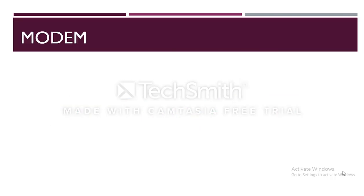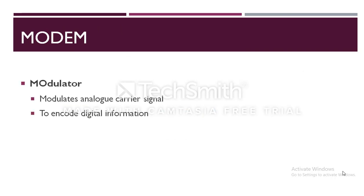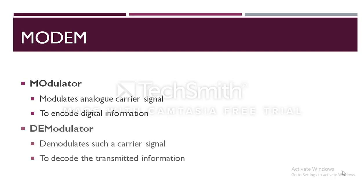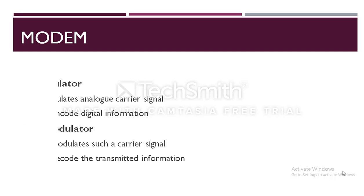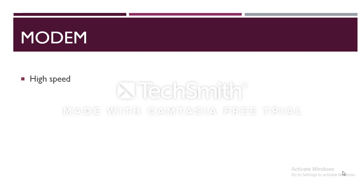It modulates an analog carrier signal to encode digital information. It also demodulates such a carrier signal to decode the transmitted information. This is why modem is an acronym of modulator and demodulator. The goal of this process of modulation-demodulation is to produce a signal that can be transmitted easily and decoded to reproduce the original digital data.